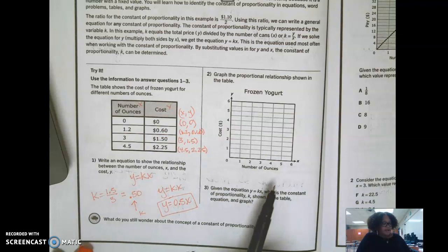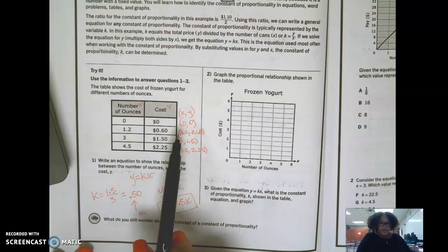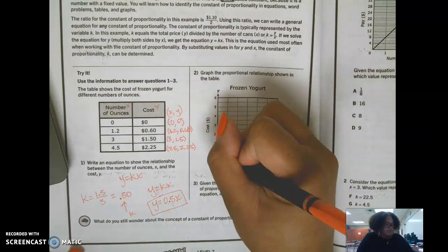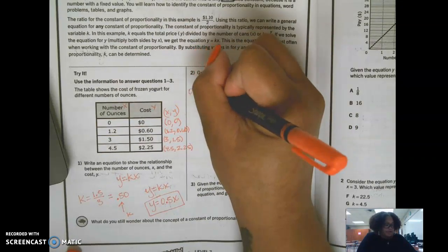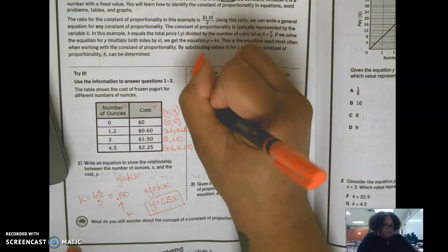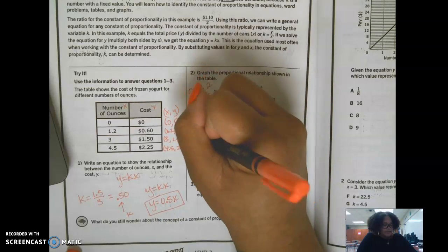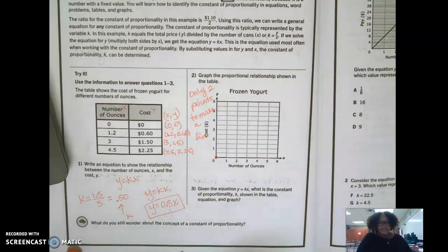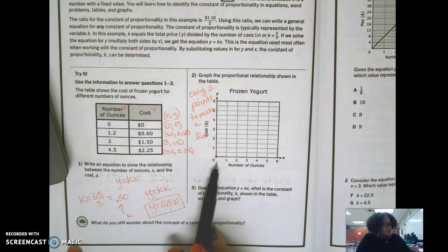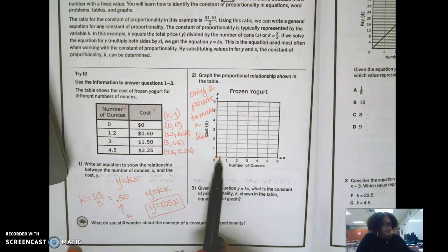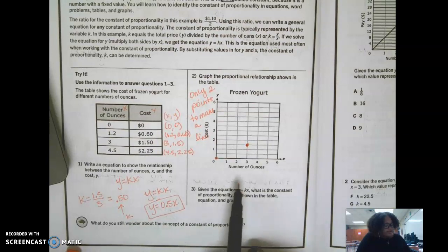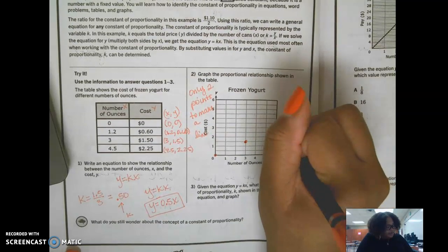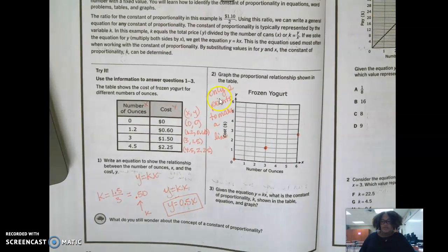Okay. Now I have to make a graph. So I'm going to use these points to help me out. A proportional relationship always goes through the origin. So I'm going to put a dot there. And you only need two points to make a line. Only two points minimum to make a line, because the definition of a line is an infinite number of points extending in two directions infinitely.